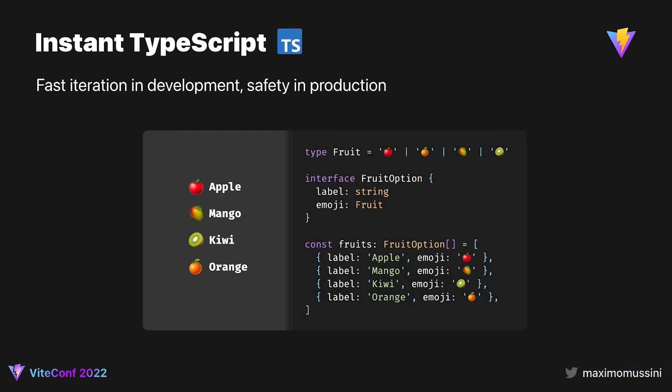Unlike in traditional setups, in Vite you can use TypeScript without waiting for the compiler to run. Under the hood, esbuild is used to discard type annotations. This allows you to prototype quickly like you would with plain JavaScript and fix compiler errors a few hours later, before pushing your code.